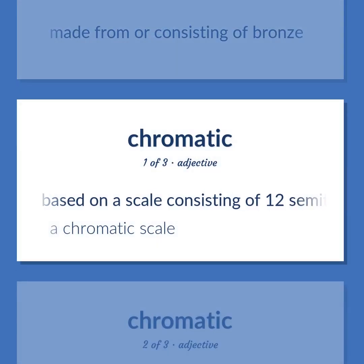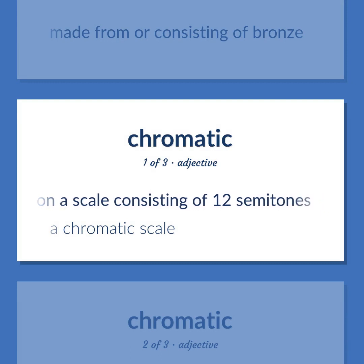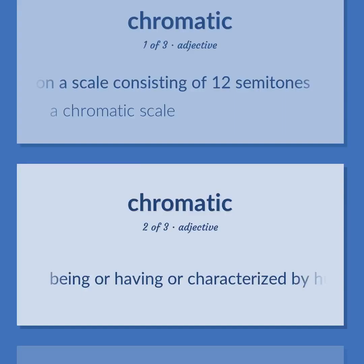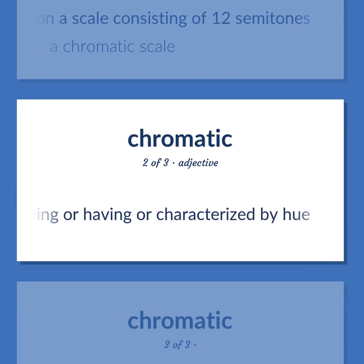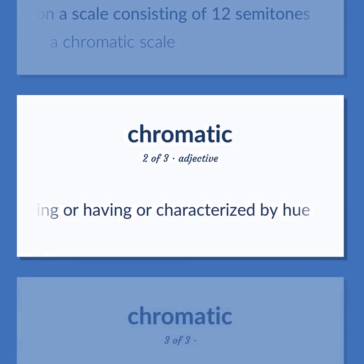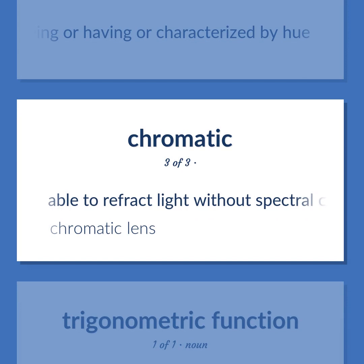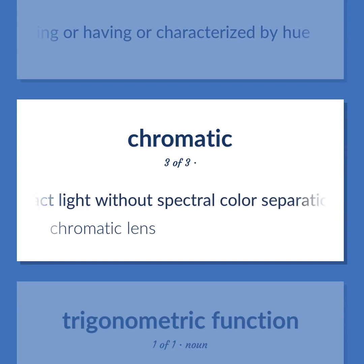Chromatic: Based on a scale consisting of 12 semitones — a chromatic scale. Being or having or characterized by hue. Able to refract light without spectral color separation — chromatic lens.